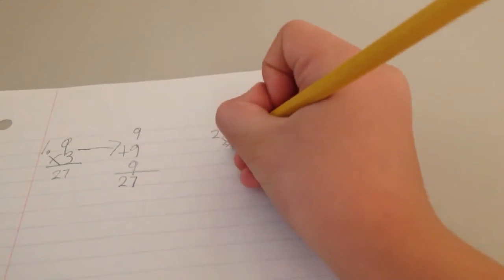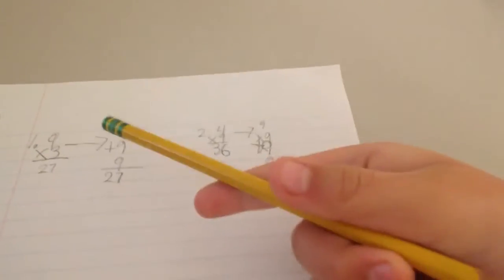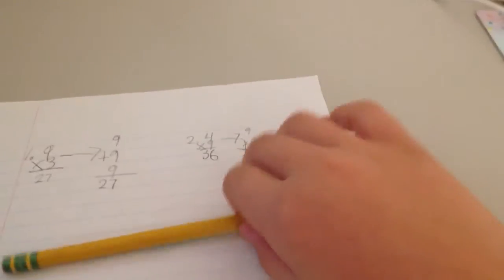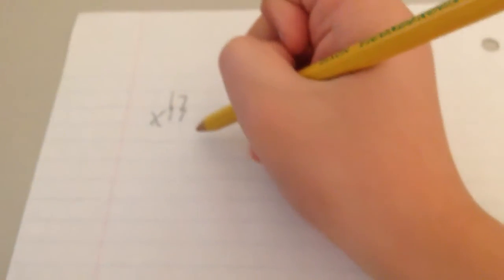And then it would go here. So that is how you do multiplication. Now what if you have a problem? What if you have a problem like this? What if you have two numbers?